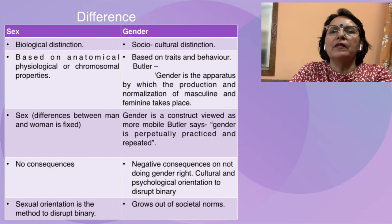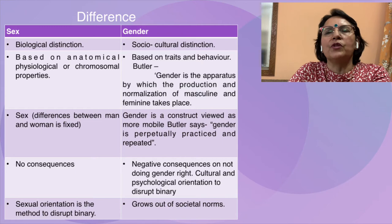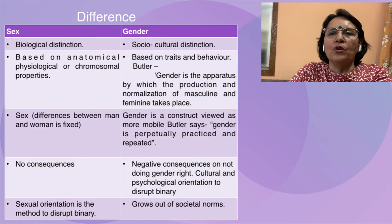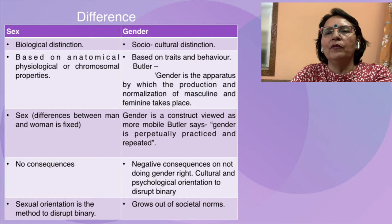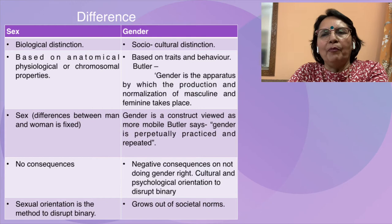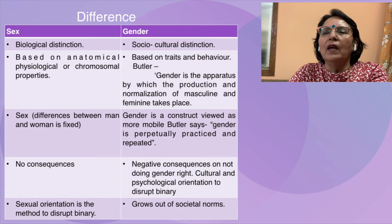Sex is a biological distinction whereas gender is a socio-cultural distinction. Sex is based on anatomical, physiological, or chromosomal properties, but gender is based on traits and behavior. Sex is the fixed difference between men and women. Butler says that gender is the apparatus by which the production and normalization of masculine and feminine take place, and it is a constructed view which is more mobile.